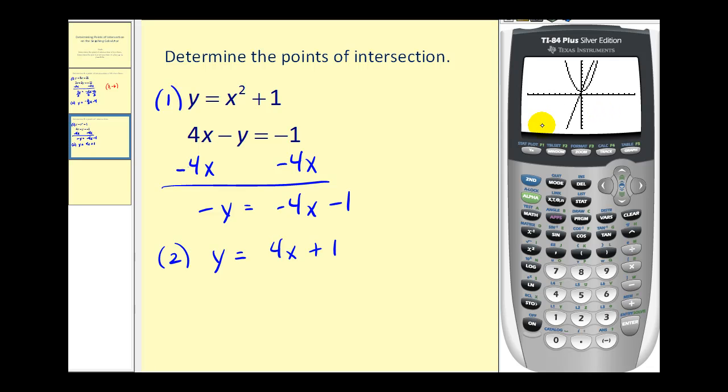Now if your calculator did not have the standard window, remember you can press zoom 6 to switch it back. Notice on this graph we can only see this point of intersection, and this point of intersection is off the screen. So we're going to have to adjust the window.